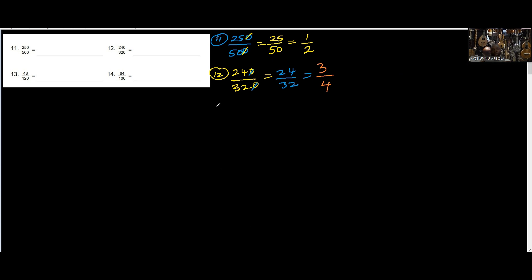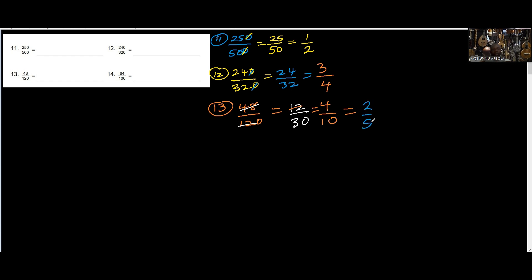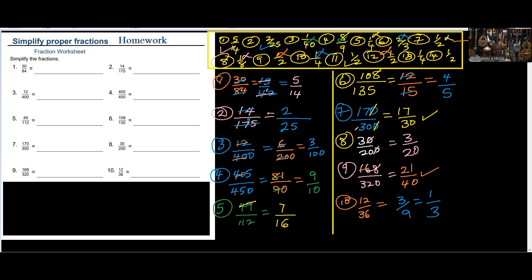Number 13 — we have 48 over 120. I can use 4: 4 into 48 is 12 and 4 into 120 is 30. I can still use 3: 3 into 12 is 4 and 3 into 30 is 10. Then use 2: 2 into 4 is 2 and 2 into 10 is 5. Let me check — 24 into 48 is 2 and 24 into 120 is 5, so the answer is 2 over 5. That is correct.